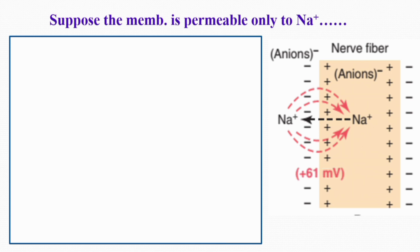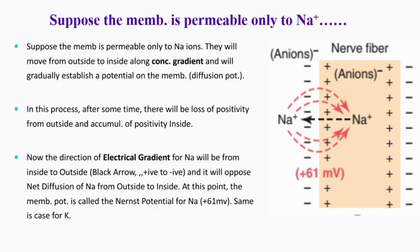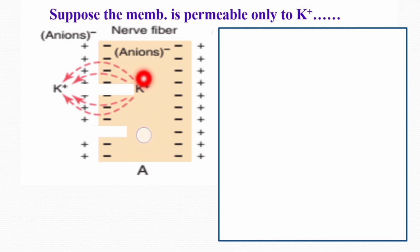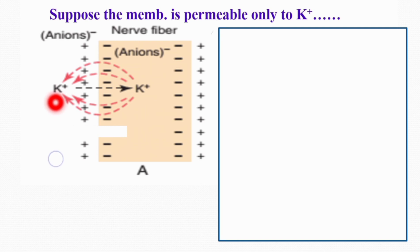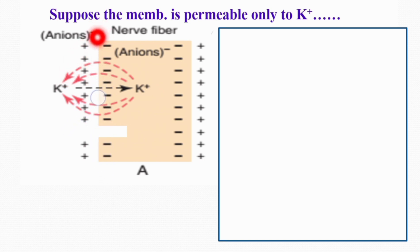The same applies to potassium ions. Potassium ions are more inside and less outside, so along the concentration gradient they move from inside to outside. After accumulating outside, positive potassium ions repel other potassium ions, so along the electrical gradient potassium tends to move from outside to inside. This electrical gradient opposes the net movement of potassium along the concentration gradient. At this point, the charge on the nerve fiber is called the Nernst potential for potassium, with a value of about 94 millivolts.